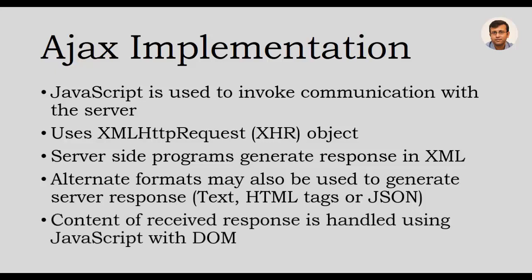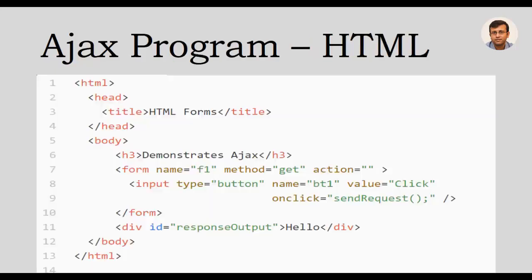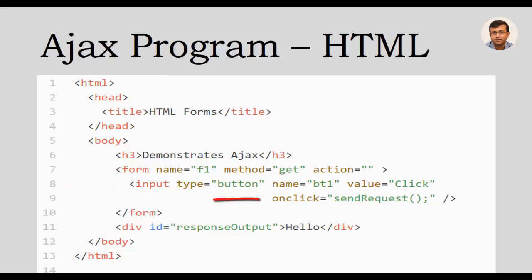The content of the received response is then handled using JavaScript with the DOM, or Document Object Model. Let us look at the practical implementation of Ajax. This is an HTML program where we are using a form tag which has an input button. A button is used to trigger an action, and when clicked it calls a user-defined function called sendRequest, which is a JavaScript function we will see in the next slide.